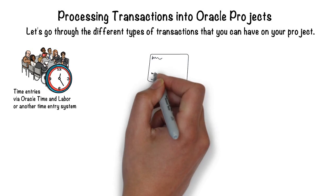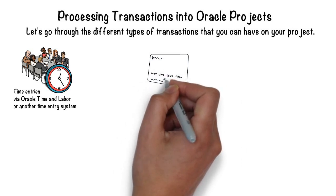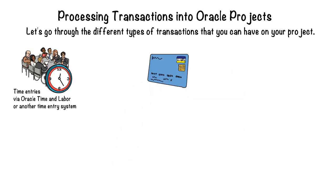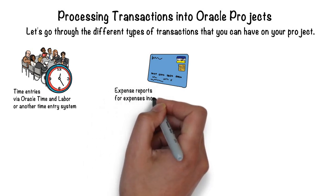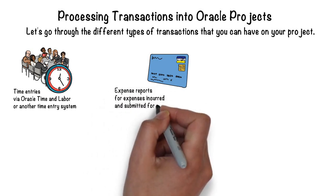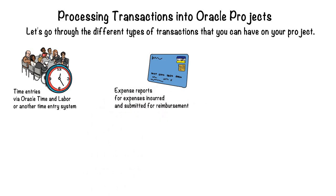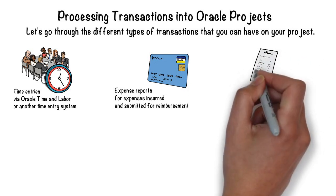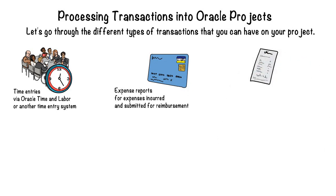The second way is that team members may require something they need to buy ahead of time, and so they would go ahead and purchase it and then submit for reimbursement from your company. Those would be considered expense reports.